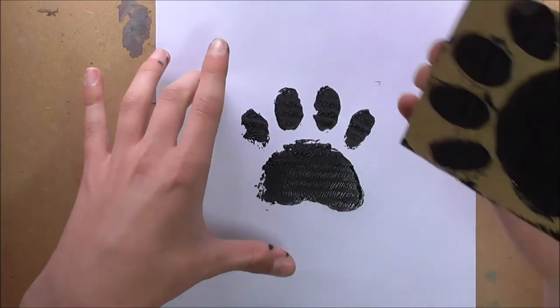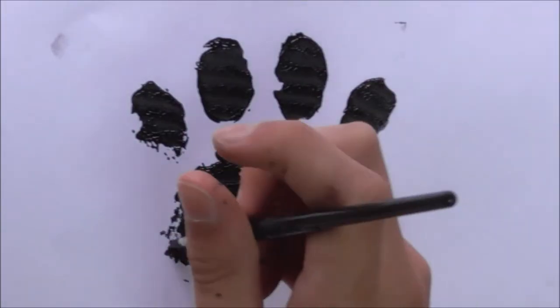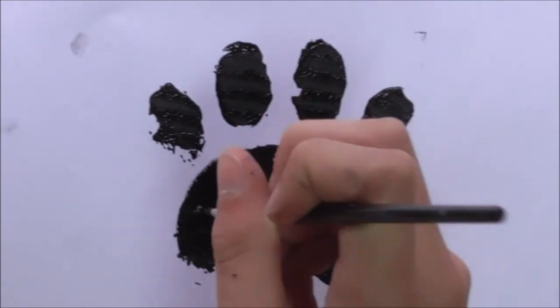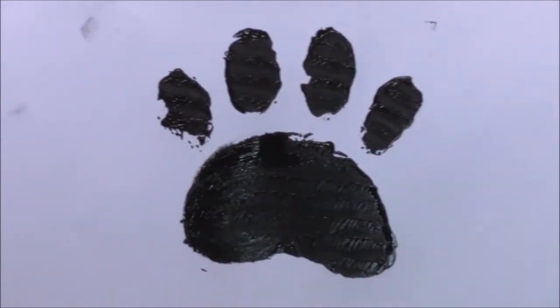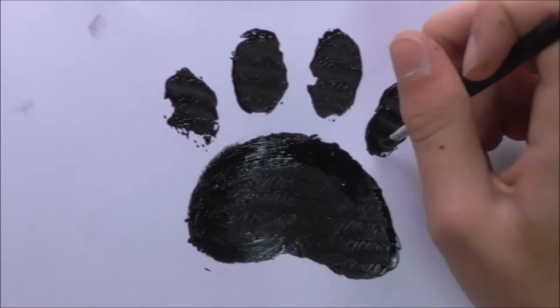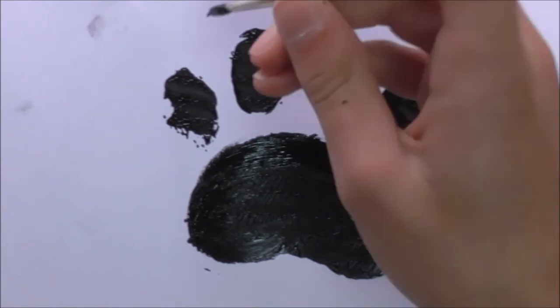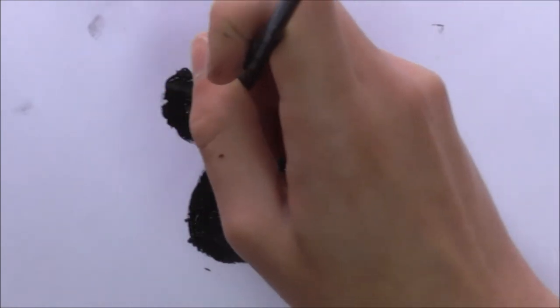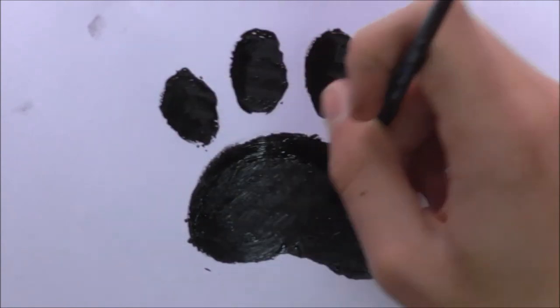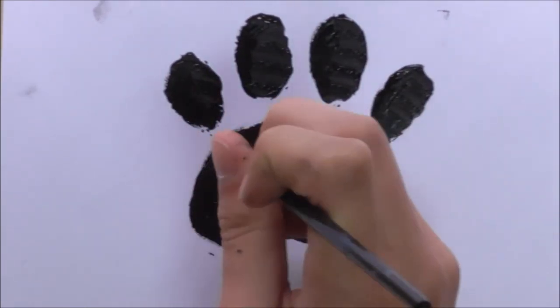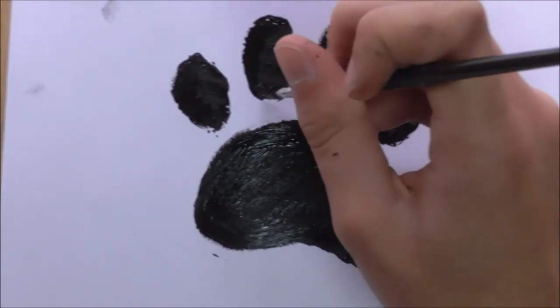Once you're sure that's done, you can then lift it off and there is your print. If like mine there's a few places where the ink didn't quite come off, then you can go back in with a paintbrush just to neaten everything up. However, if you'd like to leave it like it was just for added texture, then that's absolutely fine. It's completely up to you.